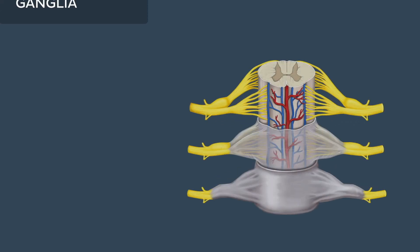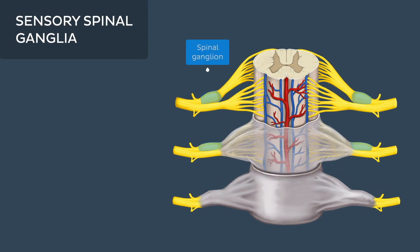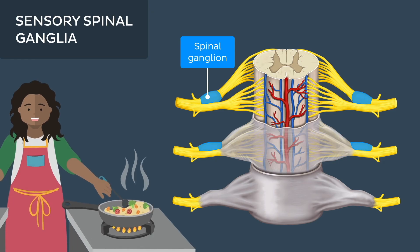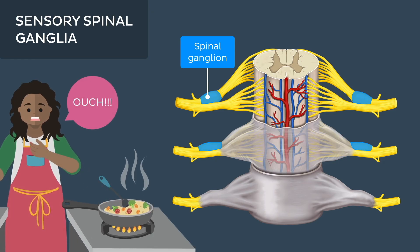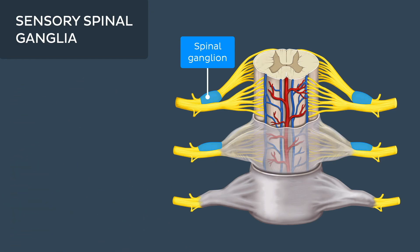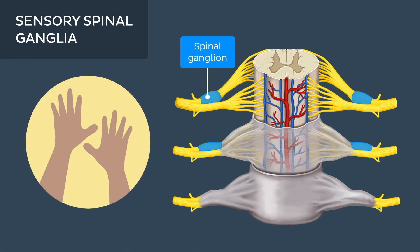As we have seen, the spinal ganglion is a cluster of cell bodies found on the posterior root of a spinal nerve, which carries sensory information relating to pain, touch, and temperature from the periphery to the spinal cord.